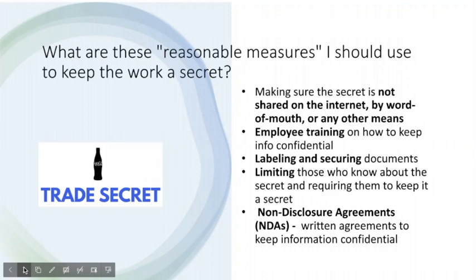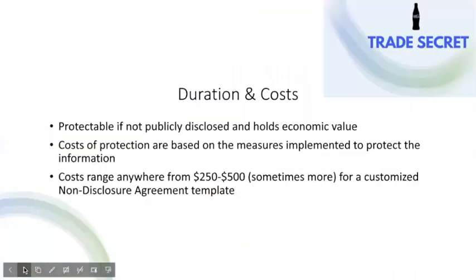Employees, vendors, and any other third parties who need to know trade secret information should be required to sign an NDA. Some additional common tools to ensure secrecy include labeling confidential information as confidential and frequent employee training on the handling of confidential information. All of these procedures, when applicable, should be undertaken in some form or fashion to protect the secret. Trade secrets are protectable so long as the information is not publicly disclosed, appropriate security measures are in place, and the information retains economic value. The total costs of trade secret protection are entirely dependent on the steps and measures implemented to maintain secrecy, but generally you can expect to pay anywhere from $250 to $500 for a non-disclosure agreement prepared by an attorney.